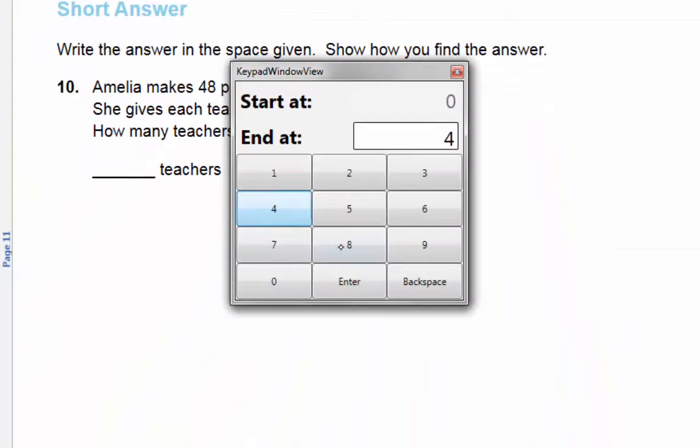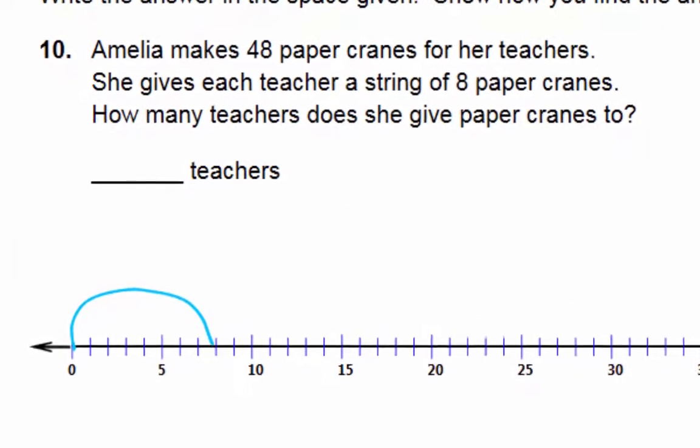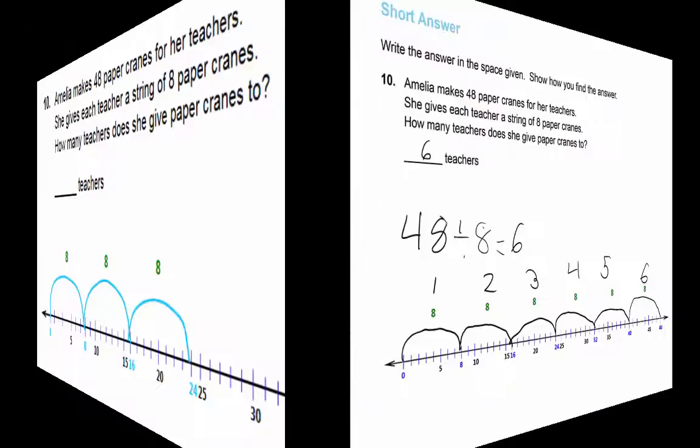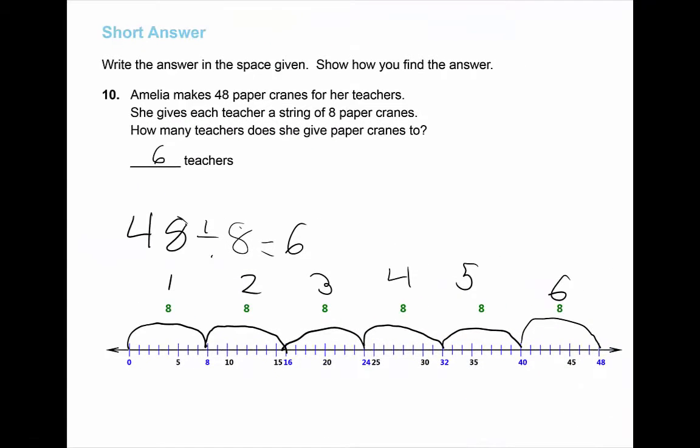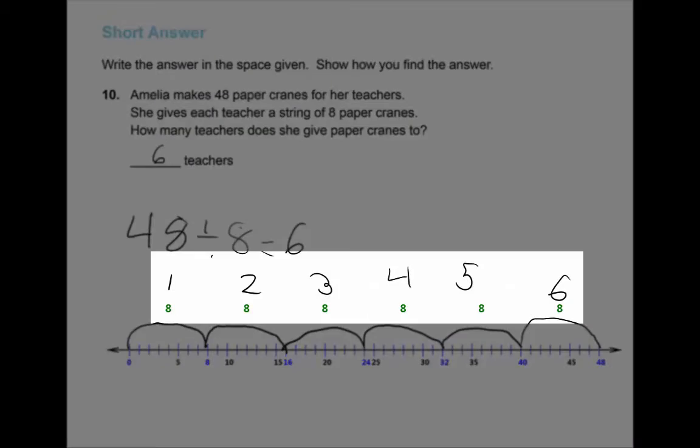For this problem, students create a number line using the dividend as a length and make jumps by the given factor to determine the quotient. The tool provides feedback by showing the size of the jumps, which students can use to correct their work. This student created a number line up to 48 and made jumps of eight until the end. She counted the jumps she made to get the quotient of six.